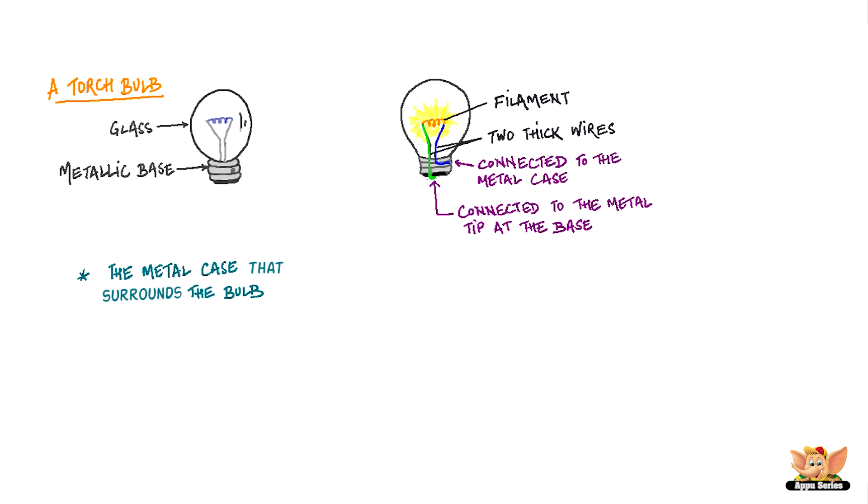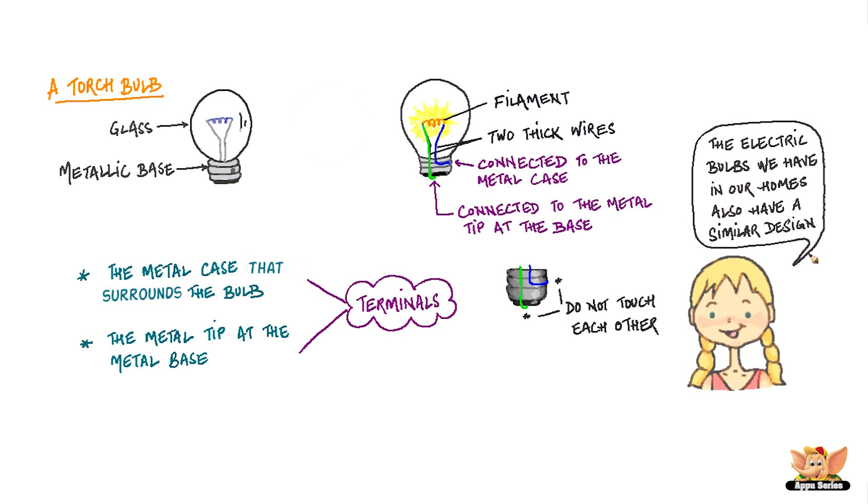The metal case that surrounds the bulb and the metal tip at the base of the bulb are the two terminals of the bulb. These two terminals are fixed in such a way that they do not touch each other. The electric bulbs that we have in our homes also have a similar design.